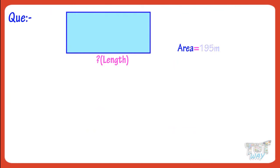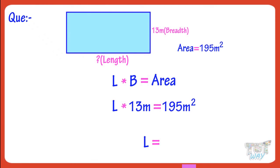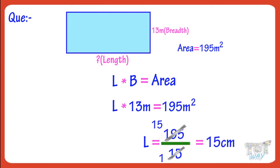Now let's solve another question. Find the length of a given rectangle having area 195 m square and breadth 13 m. We know length multiplied by breadth equals area. Solving this equation, we get length equals 195 divided by 13. 195 divided by 13 is 15. So, length is 15 m.